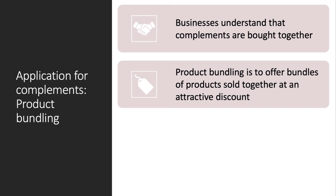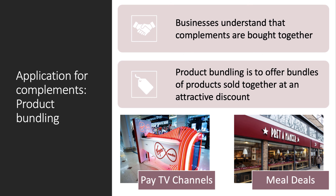An application of complementary products is the idea of product bundling. Many businesses understand that complements are bought together. Product bundling is when you offer a combination, or a bundle of products, that are sold together at what appears to be an attractive discount. The key advantage is that consumers purchase more products at once, and therefore the average order value goes up. A classic example is where TV channels bundle various channels together as part of a package deal.